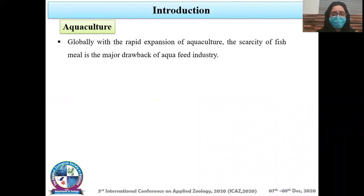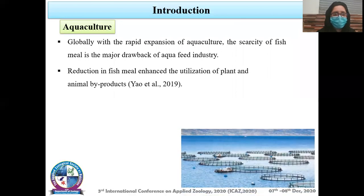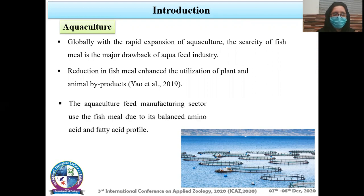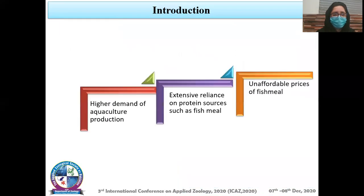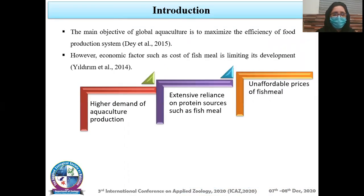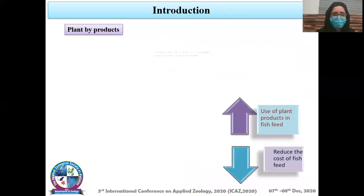Introduction: Aquaculture. Globally, with the rapid expansion of aquaculture, the scarcity of fish meal is the major drawback of the aqua industry. Reduction in fish meal has enhanced the utilization of plant and animal byproducts. The aquaculture feed manufacturing sector relies on fish meal due to its balanced amino acid and fatty acid profile. The main objective of global aquaculture is to maximize the efficiency of food production systems. Economic factors such as the cost of fish meal are limiting its development, along with higher demand for aquaculture production and extensive reliance on protein sources such as fish meal.